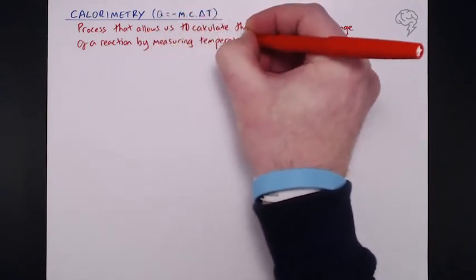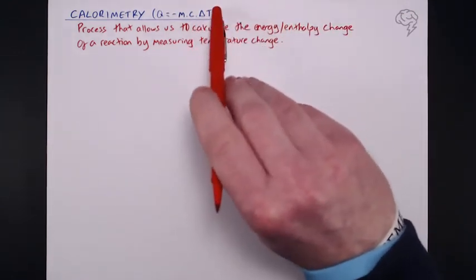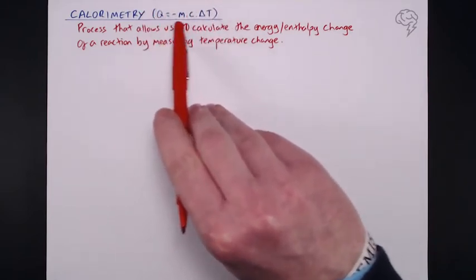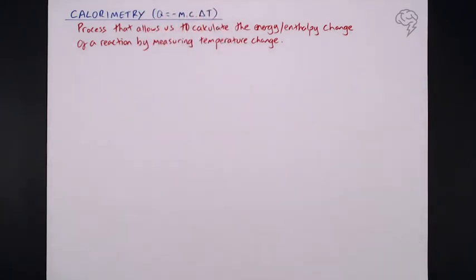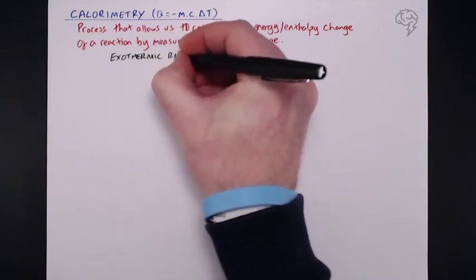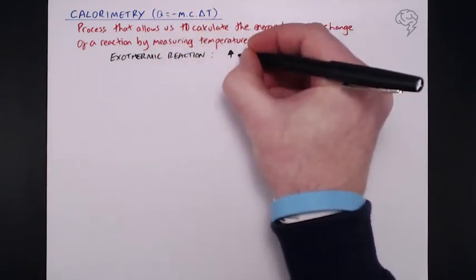So it links the energy change to temperature change and you can probably see up here already that delta T, the change in temperature, is involved in this equation. We can lump energy changes or enthalpy changes into two categories: exothermic reactions and endothermic reactions.